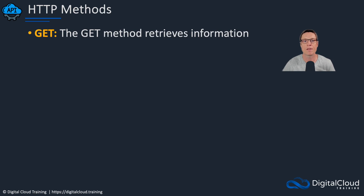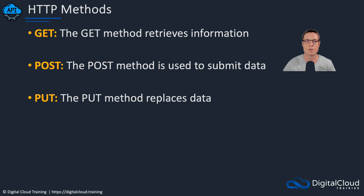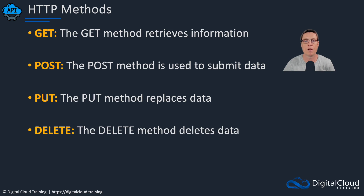The HTTP protocol has something called methods, sometimes known as verbs. We have the GET method — this is for retrieving information. When you connect with your browser to amazon.com, your computer needs to download pictures, text, and maybe videos, so it's performing a GET request. If you're uploading data, you'll use POST or PUT. POST is the method used to submit data, PUT is used when something needs to be replaced, and there's also the DELETE method for deleting data.